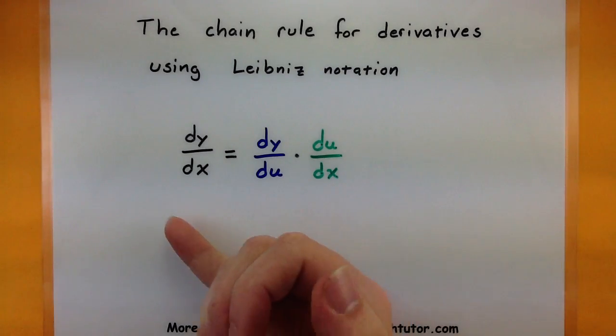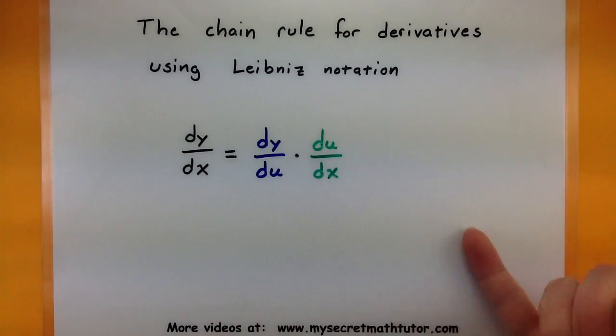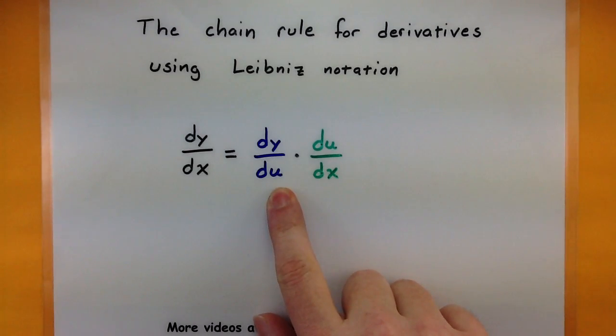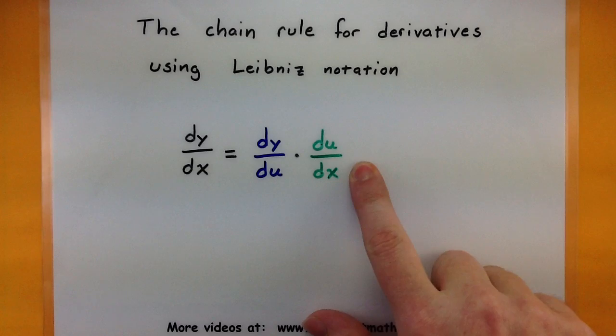So in case you've never seen Leibniz notation before, it looks a lot like this, where essentially we want to know the derivative of y with respect to x, but in order to do that we'll first figure out the derivative of y with respect to u, and the derivative of u with respect to x.